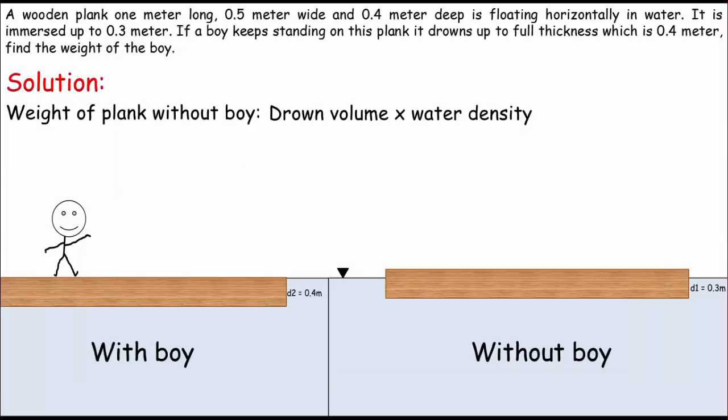According to the Archimedes principle, the weight of the floating body equals the weight of displaced volume of liquid. Therefore, the weight of the plank equals the drown volume of the plank times the density of water.